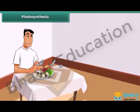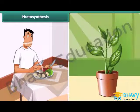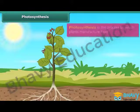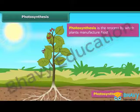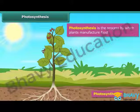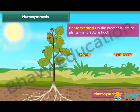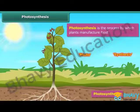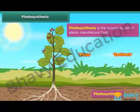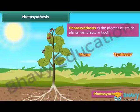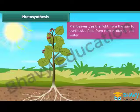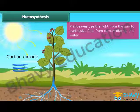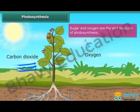Just as human beings need food to survive, plants also require food to live. Photosynthesis is the process by which plants manufacture food. The word photosynthesis is derived from two words: 'photo,' which means light, and 'synthesis,' which means preparation. Thus, photosynthesis means producing with the help of light. In this process, plant leaves use the light from the sun to synthesize food from carbon dioxide and water. Sugar and oxygen are the end products of photosynthesis.